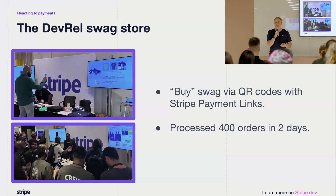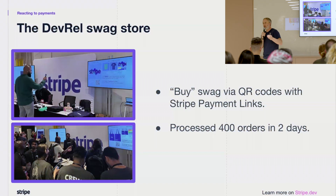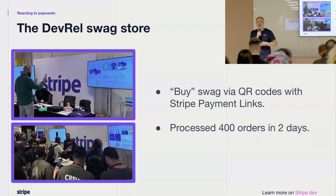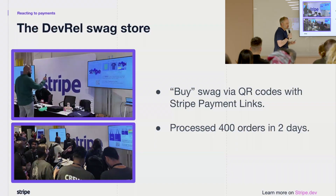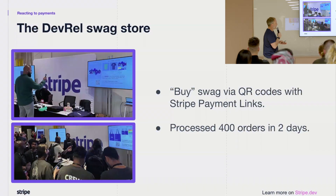The first time we ran this was at an event called GoToChicago. GoTo run lots of technology events all over the world — Amsterdam, Chicago, a couple in the Nordics, and lots of things in London as well. We created this for GoToChicago, and the idea was to allow people at the expo hall to walk up to our Stripe booth and not just have a general chat, but to let them try out Stripe technology without them even really realizing they were using a demo.